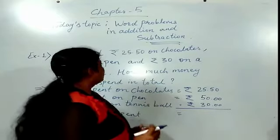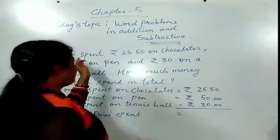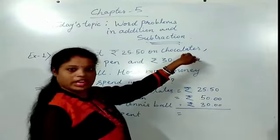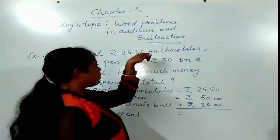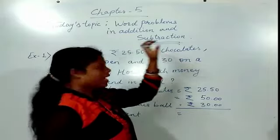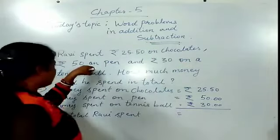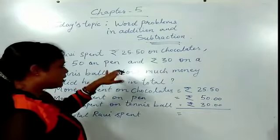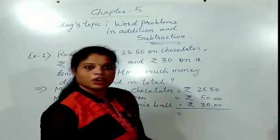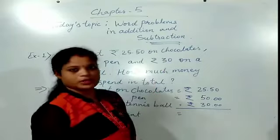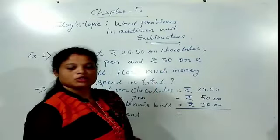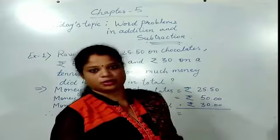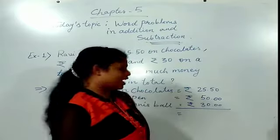So, Ravi went to the market and he bought chocolates, and there he paid rupees 25.50. Then for the pen he paid rupees 50, and for the tennis ball he paid rupees 30. So, in total, how much did he pay? That we have to calculate.